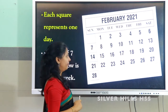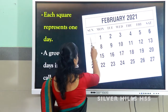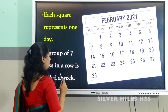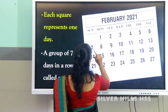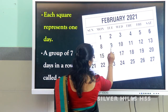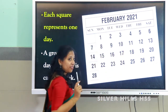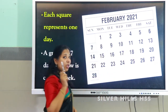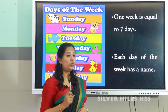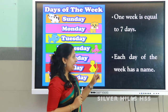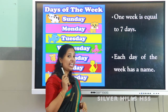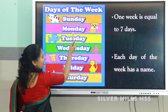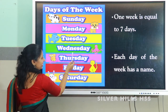Each square represents one day — this square represents one day, and similarly this square also represents one day. A group of seven days in a row is called a week. That is, seven days — 1, 2, 3, 4, 5, 6, 7 — seven days in a row makes a week. One week equals seven days.